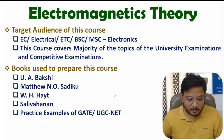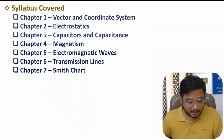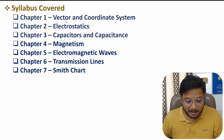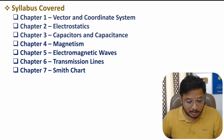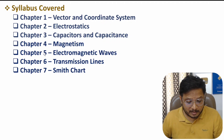With this course, in total seven chapters are there. The first chapter is based on Vector and Coordinate System. The second chapter is based on Electrostatics. The third chapter is based on Capacitors and Capacitance. The fourth chapter is based on Magnetism. The fifth chapter is based on Electromagnetic Waves. The sixth chapter is based on Transmission Line, and the last chapter is based on Smith Chart.